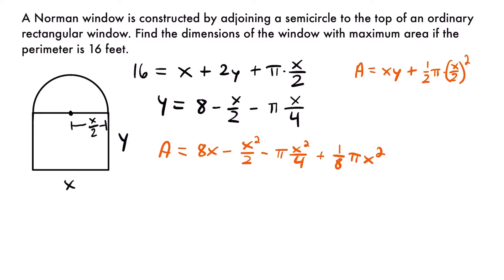Before taking the derivative, we need to determine what values of x make sense — the domain of x. The smallest possible value of x is not negative, so the lower bound is 0, but it can't actually be 0 because then we wouldn't have a window. So we use a parenthesis, not a bracket, at 0.